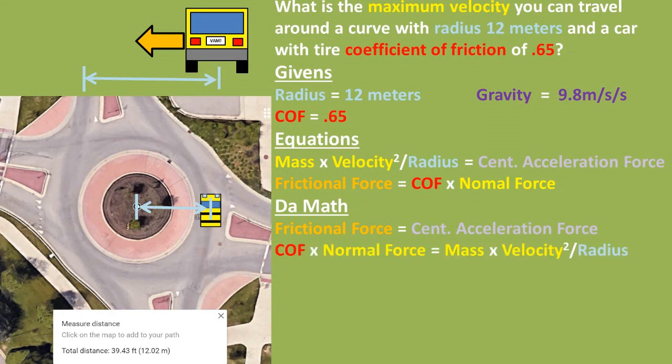We can set the max frictional force equal to the centripetal acceleration force to find the maximum velocity. So we are left with the coefficient of friction times the normal force being equal to the mass times velocity squared over the radius. Recall that on a flat surface, the normal force is mass times gravity.